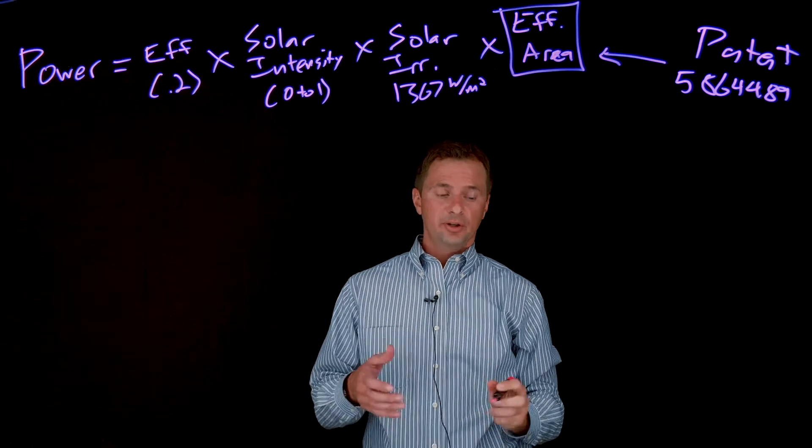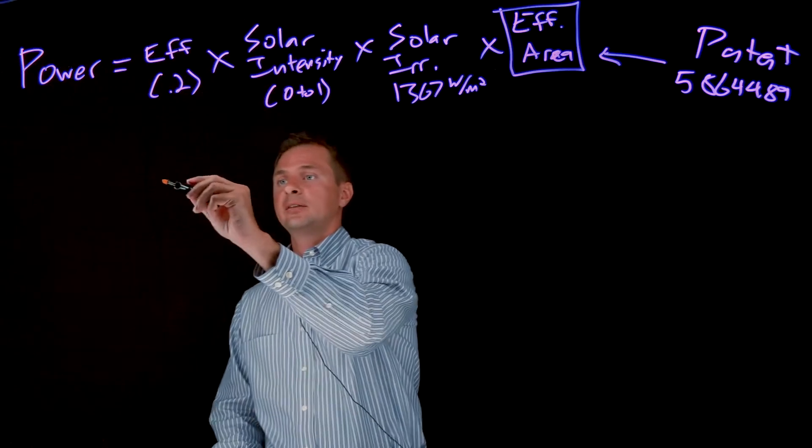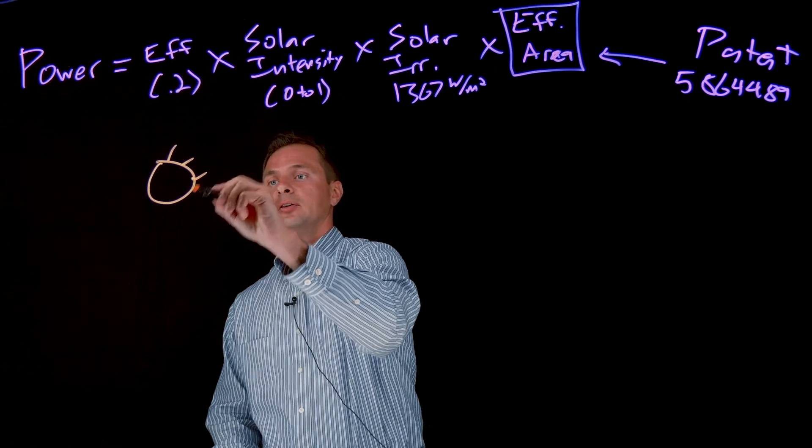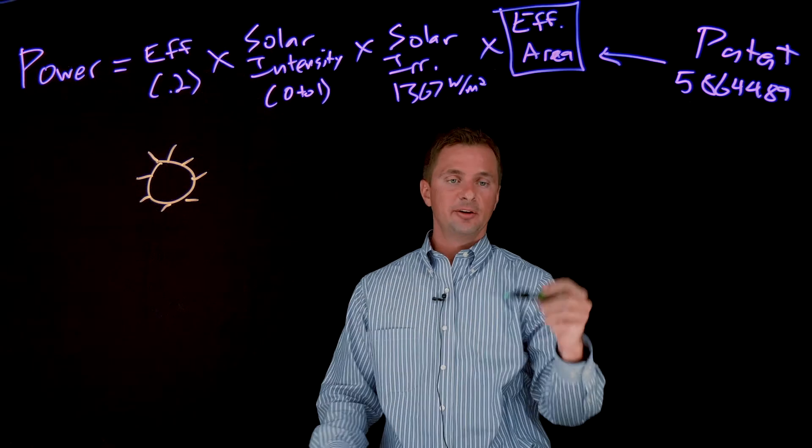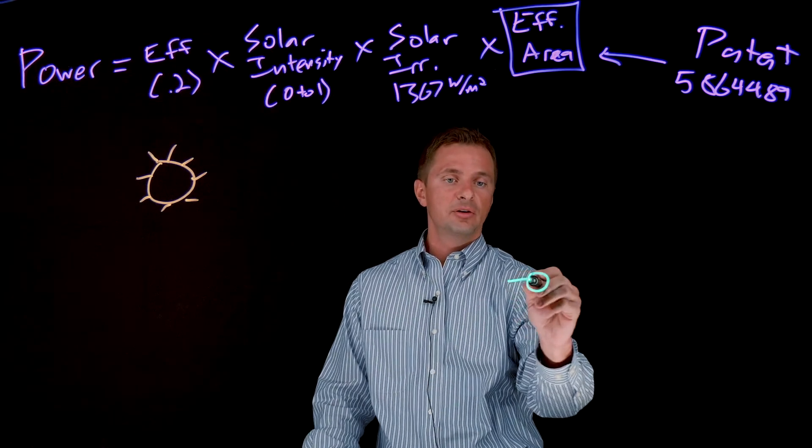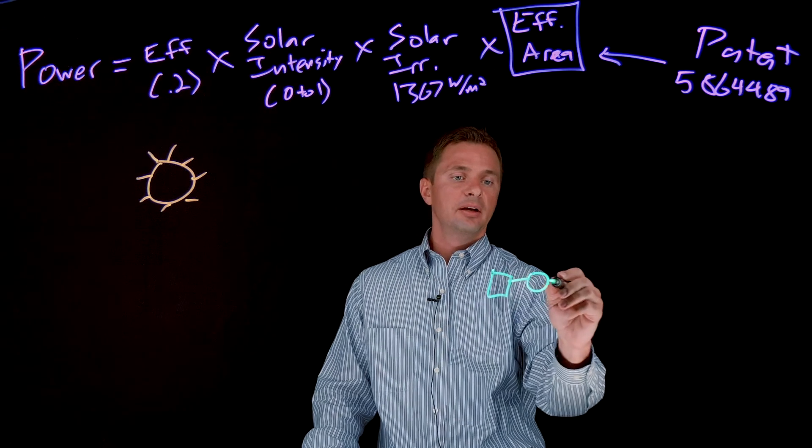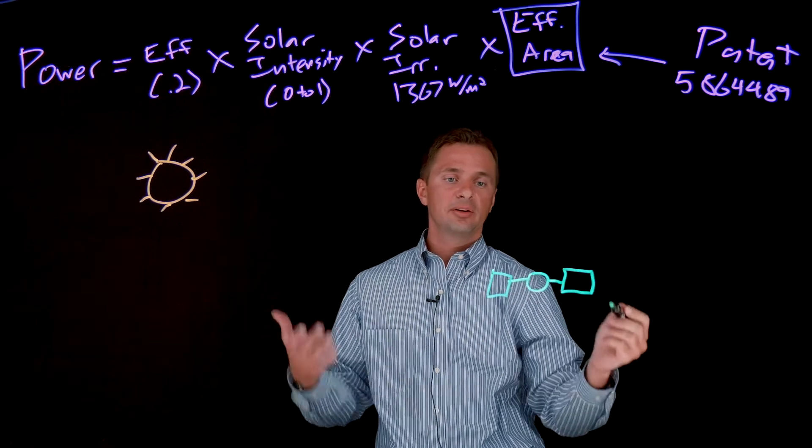So the way that this works is I'll give you a diagram here. So you've got the sun that is the source of the power. And you've got your spacecraft flying over in some orbit. And I'm just going to do a generic drawing here. But you maybe have a spacecraft that has two solar panels, let's say.